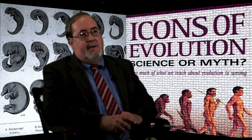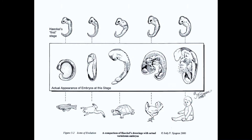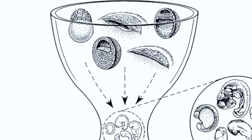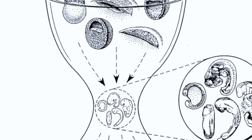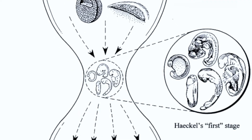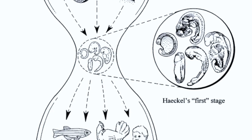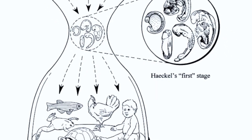He distorted them to make them look more similar than they really are. And for me as a scientist, the worst thing about Haeckel's drawings is that he totally leaves out the earliest stages of embryo development. The embryos he portrayed as being the earliest are actually midway through development. When you go back and look at the earliest stages of fishes, amphibians, birds, and mammals, they look very, very different. So instead of early similarity developing into later differences, we have early differences converging midway on certain similarities — which he exaggerated — and then diverging again as the embryos develop.